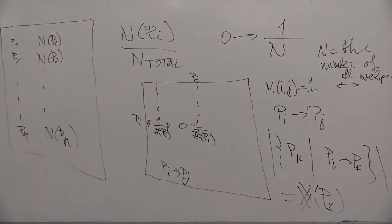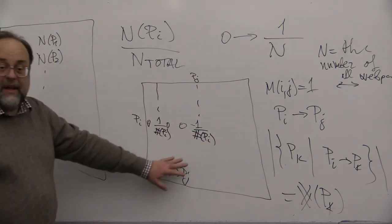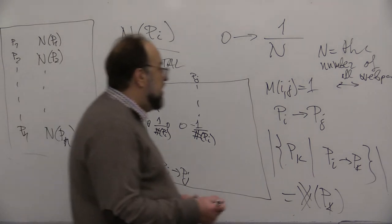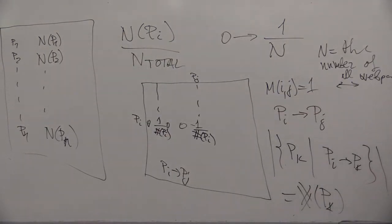So this strategy of random jumps will alter this matrix and the new matrix we will call G, and then one can show that the page rank can be computed as equal to the limit of G to the N applied to a vector that is 1 over N everywhere.